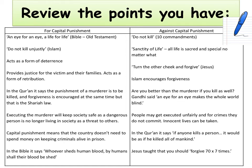Islam also encourages forgiveness. Another idea is the question of whether you're better than a murderer if you kill as well — Gandhi said an eye for an eye makes the whole world blind, and it does seem hypocritical if the punishment for killing people is to kill them ourselves. People may get executed unfairly and for crimes they did not commit — there are numerous cases of people being executed and then further evidence coming to light proving them innocent. In the Quran it says if anyone kills a person, it would be as if he has killed all of mankind, going against killing anyone for any reason. Finally, Jesus taught that you should forgive seventy times seven times — capital punishment is certainly not a forgiving thing to do.